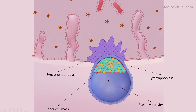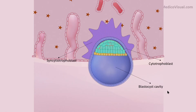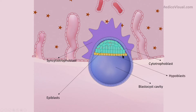The inner cell mass or embryo proper initially is an amalgam of two different types of cells. These cells then rearrange themselves. Those that come to lie on the top or dorsal side are tall columnar and high-lying — they are called epiblast — and those that are low-lying and low-cuboidal are called hypoblast.